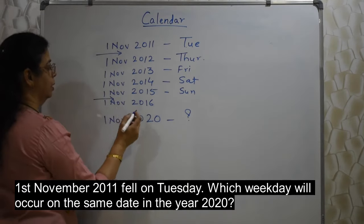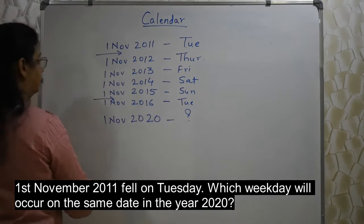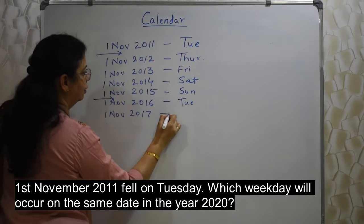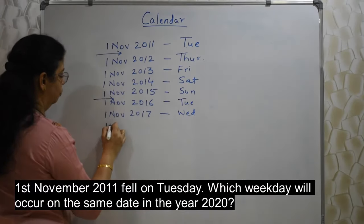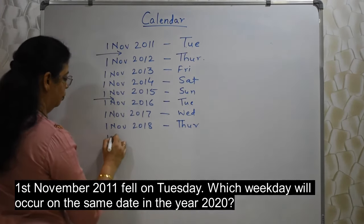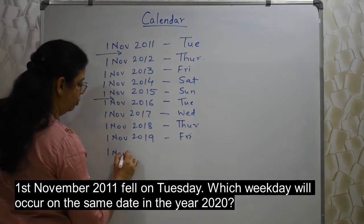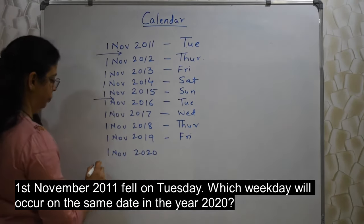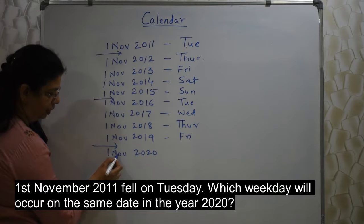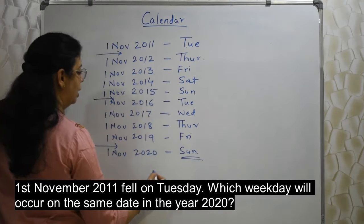2016: leap year. Does 29th Feb come before 1st November? Yes — so two jumps: Sunday → Monday → Tuesday. 2017: not a leap year, one jump → Wednesday. 2018: not a leap year, one jump → Thursday. 2019: not a leap year, one jump → Friday. 2020: leap year — 29th Feb comes before November, so two jumps: Friday → Saturday → Sunday. Answer: Sunday.